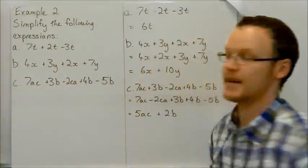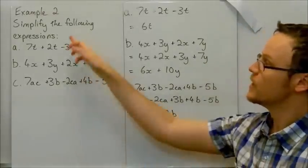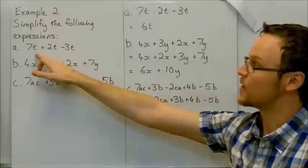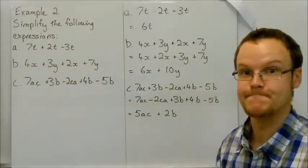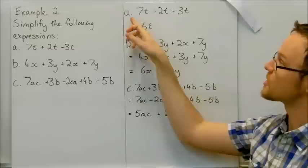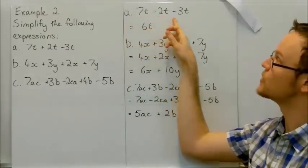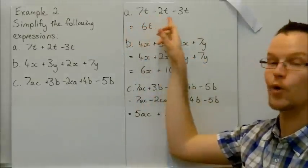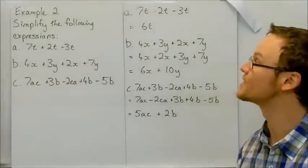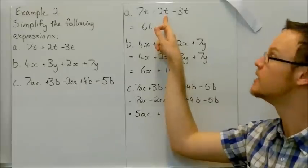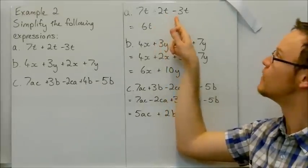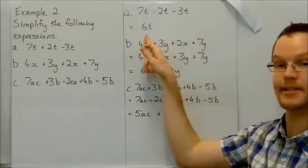Here are some more examples. We're going to simplify these expressions. These three expressions here. Our first expression is 7t plus 2t minus 3t. They are all like terms. They've all got the same variable t. So 7t plus 2t is 9t. 9t minus 3t is going to be 6t.